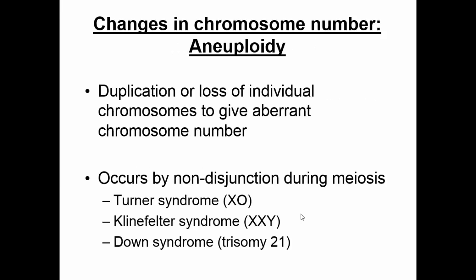There's another type of change in chromosome number called aneuploidy, which is the gain or loss of an individual chromosome. A classic example in humans is Down syndrome — three number 21 chromosomes. Other examples are Turner syndrome, where a female has only one X (the zero stands for nothing), and Klinefelter syndrome, where a male has two X chromosomes. All these disorders result from something called nondisjunction, which is when you have abnormal division of chromosomes during meiosis.